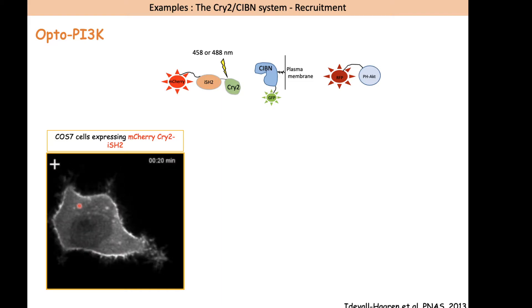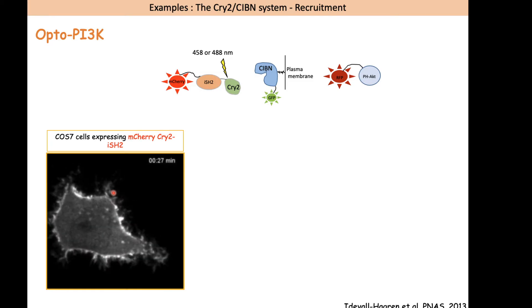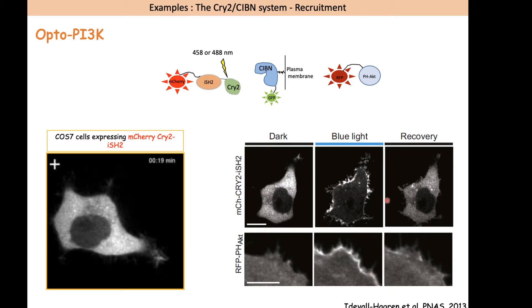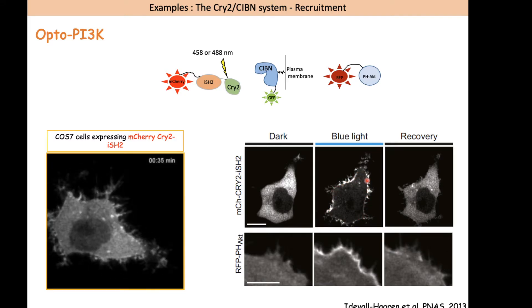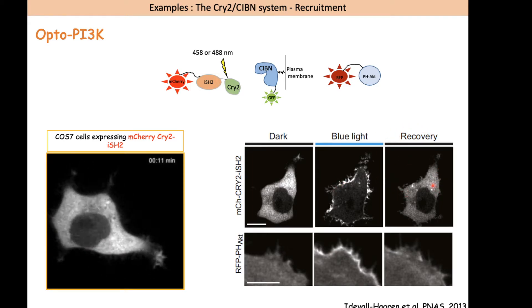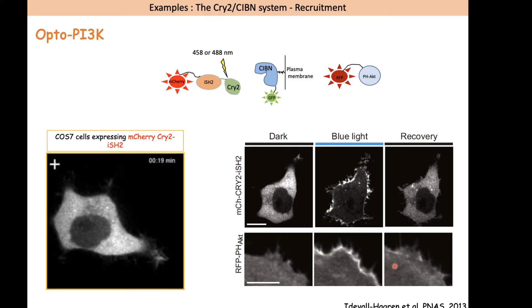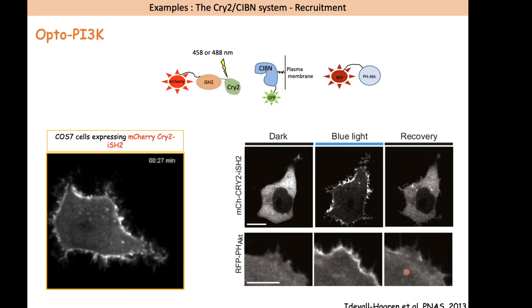Here is an example experiment in COS7 cells. The optogenetic probe is soluble in the cytoplasm at the beginning, and when blue light is applied you see recruitment to the plasma membrane and membrane deformation induced by PI3-kinase activation. When you shut down the light and let the cell recover, the probe returns to the cytoplasm. The AKT PH domain reporter shows that upon light stimulation it is recruited to the plasma membrane, and when the cell recovers this recruitment is lost, meaning PI3-kinase is no longer at the plasma membrane.